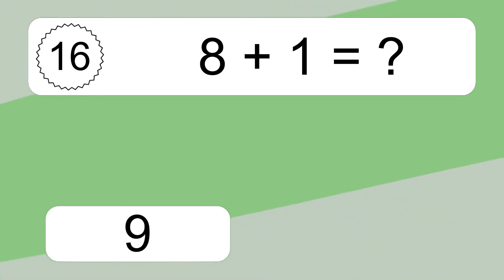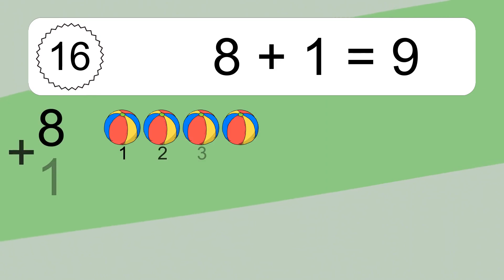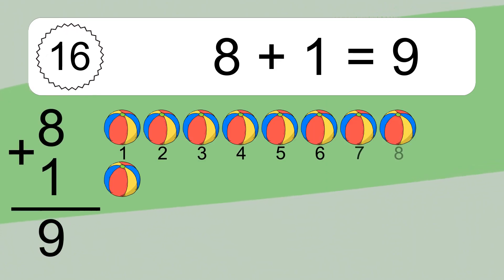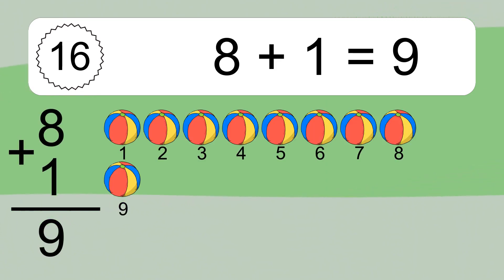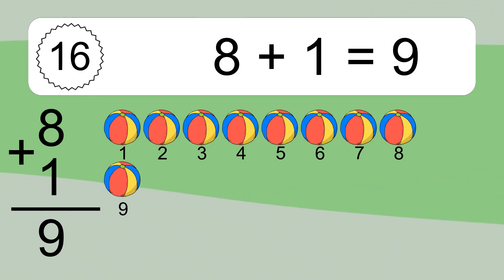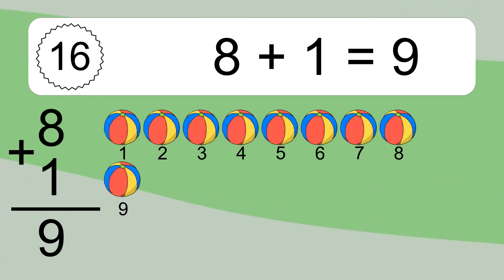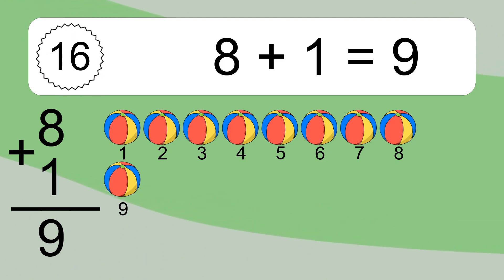8 plus 1 equals 9. Let's count it: 1, 2, 3, 4, 5, 6, 7, 8, 9.